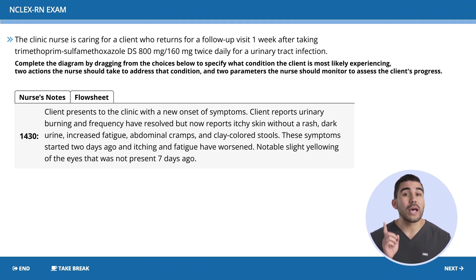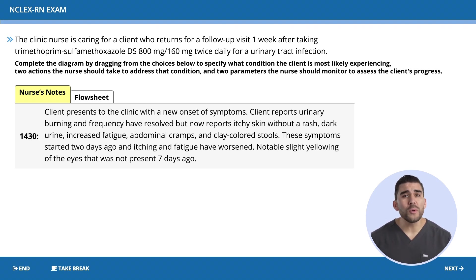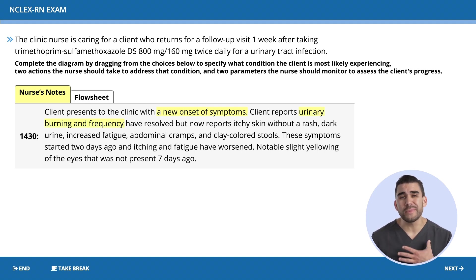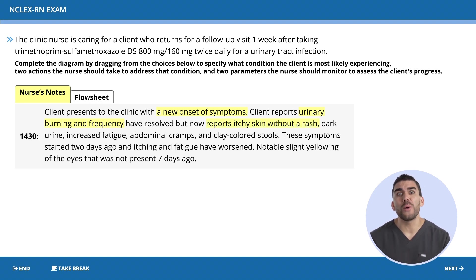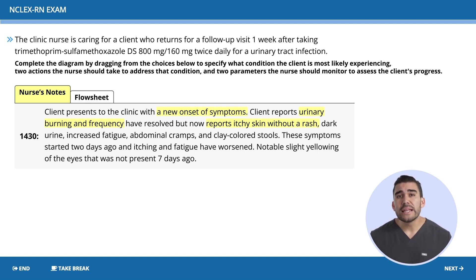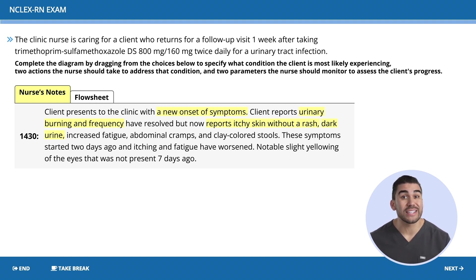Let's click on tab number one and see what else we find. In the nurse's notes, we see a new onset of symptoms: urinary burning and frequency — that sounds like a UTI, so that's expected. We also see the client reporting itchiness of the skin without a rash, which sounds like a negative response to medication. Next we see dark urine — this looks like toxic kidneys. Next is increasing fatigue, and now I'm definitely thinking toxicity.